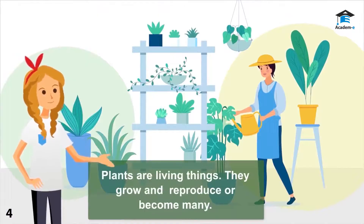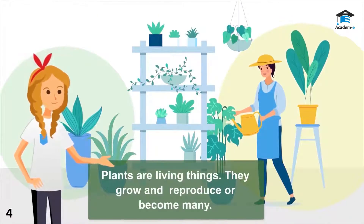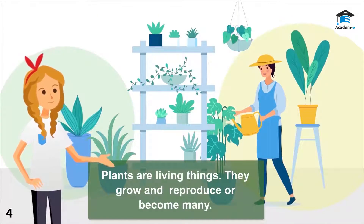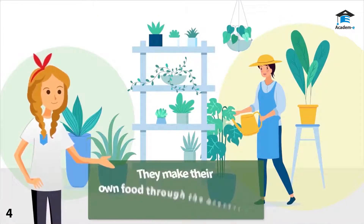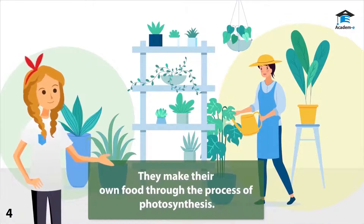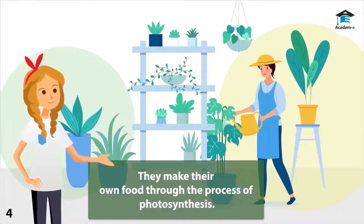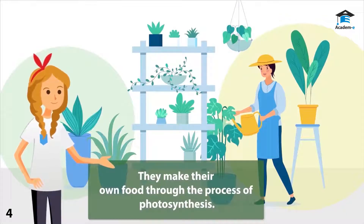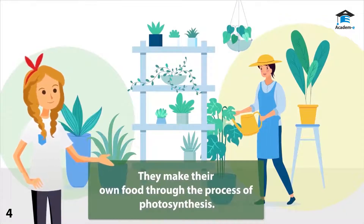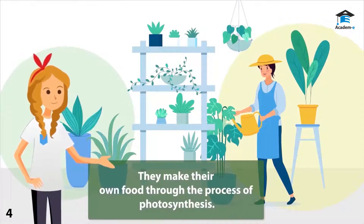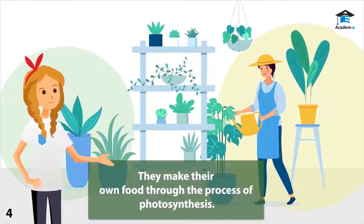Plants are living things. They grow and they reproduce, or become many. They make their own food through the process of photosynthesis. Unlike people and animals, plants cannot move from one place to another.